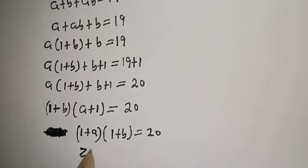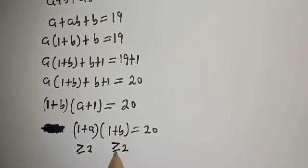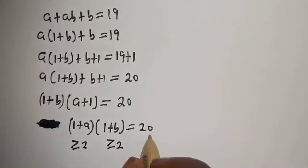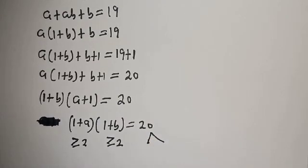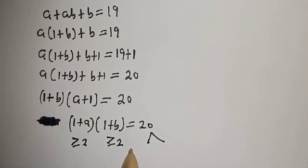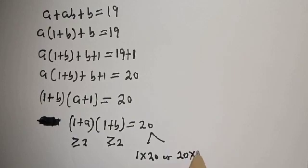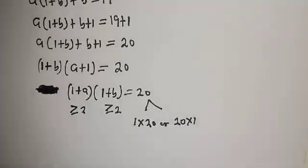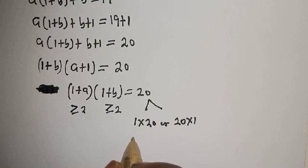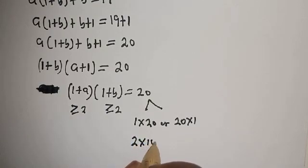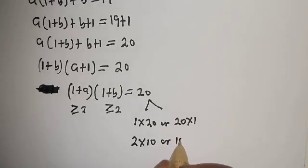And 1 + B will also be greater than or equal to 2. Now, 20 can be factored as 1×20 or 20×1, 2×10 or 10×2, and 4×5 or 5×4.